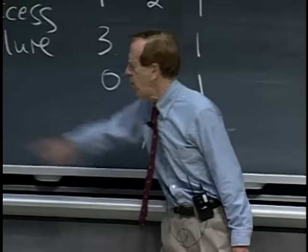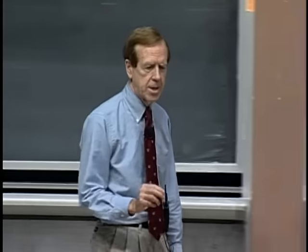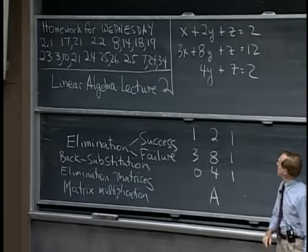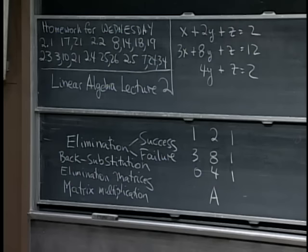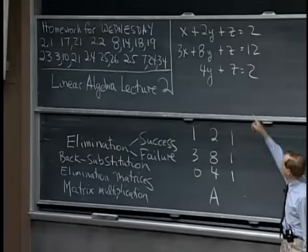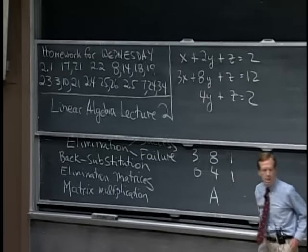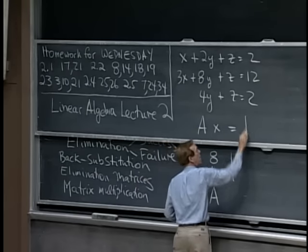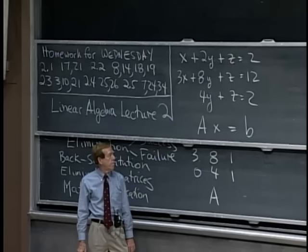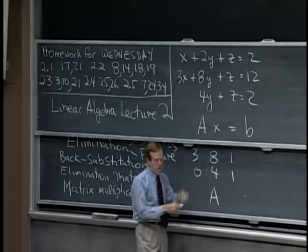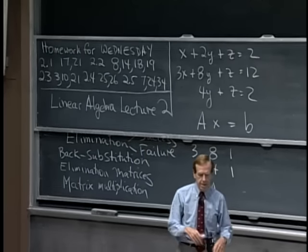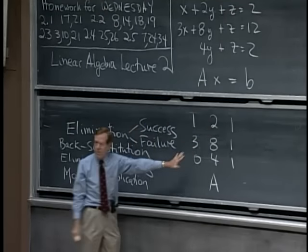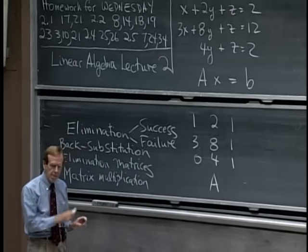One of the operations we'll meet is how do we multiply matrices and why. So there's a system of equations — three equations in three unknowns — and there's the three by three matrix. This is the system AX equals B. The right-hand side is the vector [2, 12, 2]. Everything is in that matrix, but behind it are those equations.